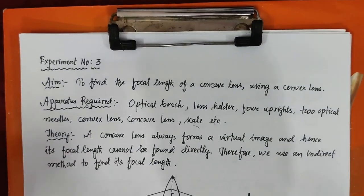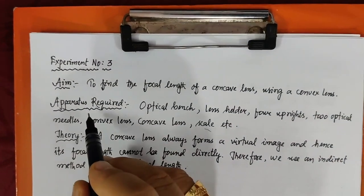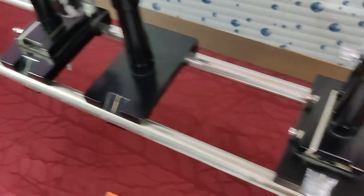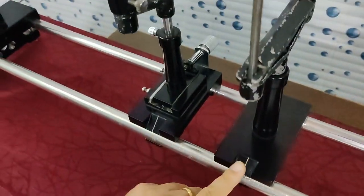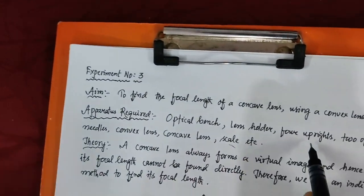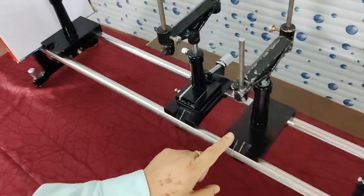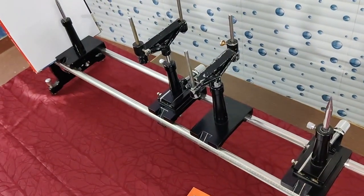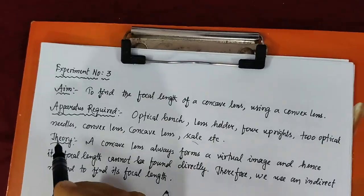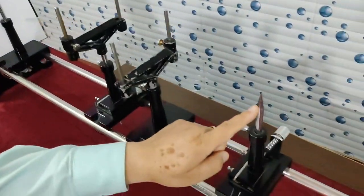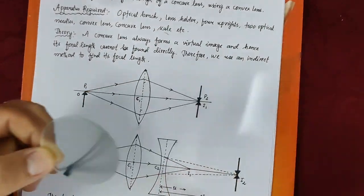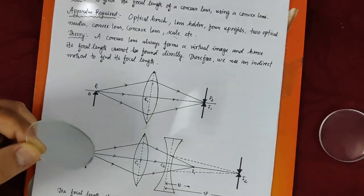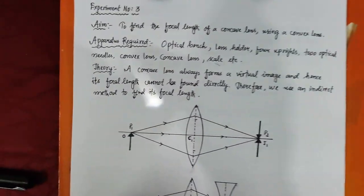Apparatus required: an optical bench, which we have already seen in the previous experiment number 2; lens holders — these are the lens holders; four uprights — one, two, three, four; two optical leaders — one, two; a convex lens and a concave lens; and a scale. These are the apparatus required.